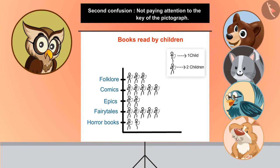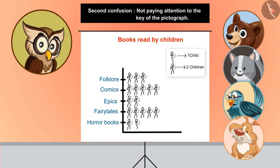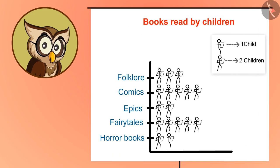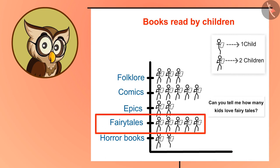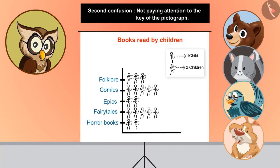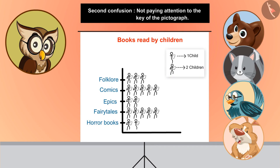Now your confusion about counting more or less than a particular number must be cleared — the number itself is not considered. Sometimes, while looking for answers from the pictograph, children do not pay attention to the key given on it. In this pictograph, we are showing a relation between children's books and the number of kids who like them. How many kids love fairy tales? One student says 5, but Chi-Chi rightly answers 10. Often we only count the number of pictures but forget to notice the key given with it. Here, each stick man depicts 2 children, so 5 pictures depict 10 children.